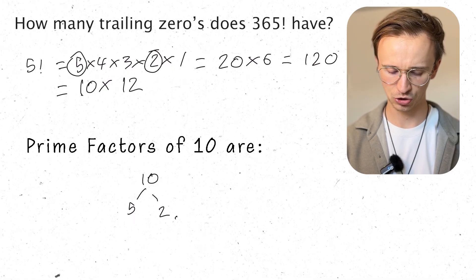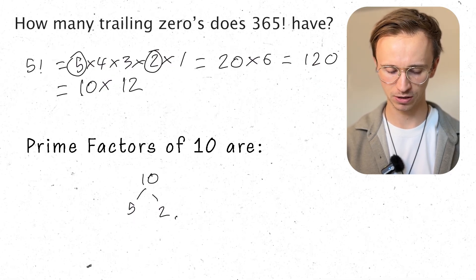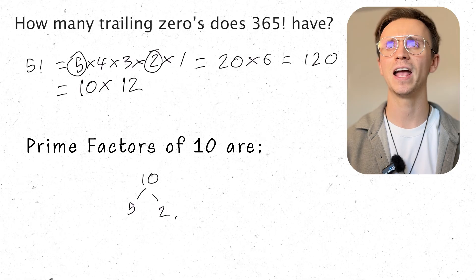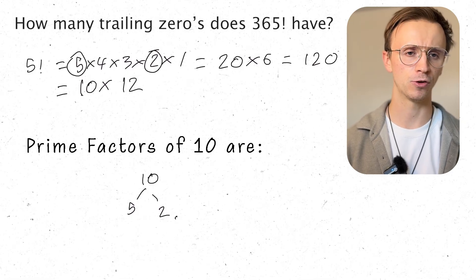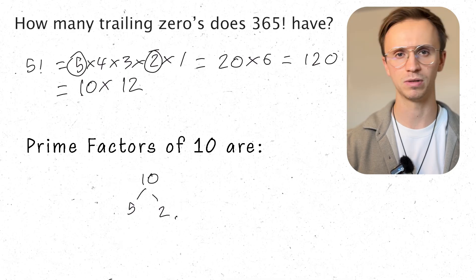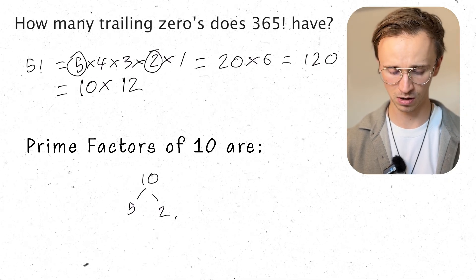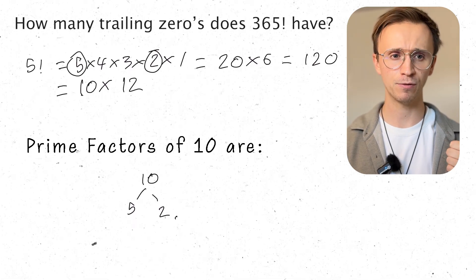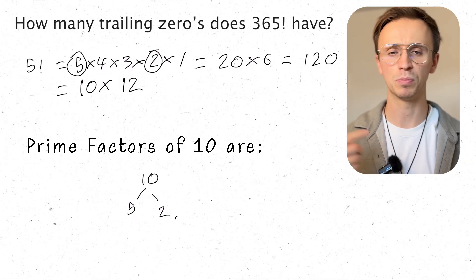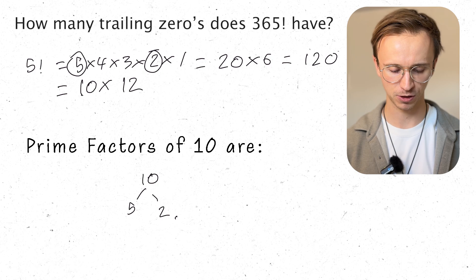So I need 5 and 2s to combine to make my trailing 0s. 5 times 2 gets me my 10. Okay, so how can I make that? Well in any factorial I'm going to have a lot of 2s. Every other number is going to have a factor of 2 if not more. Like 4 has 2 of them. Whereas 5s are much less common. So for every 5 I need a 2, there's going to be plenty of 2s spare. Not enough 5s.